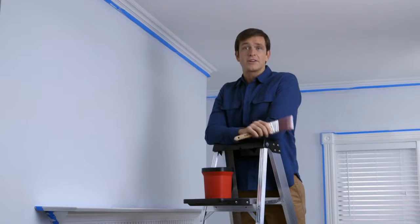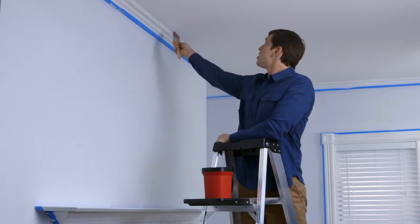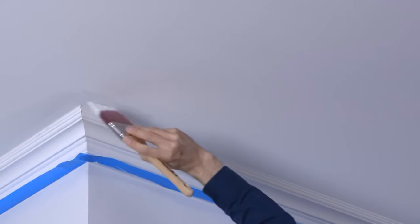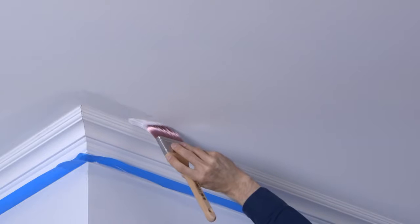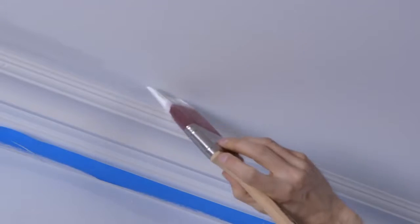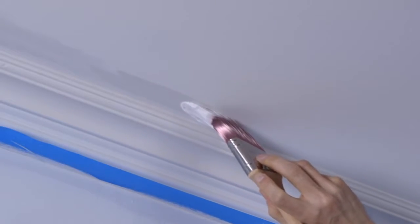If your ceiling is part of your painting project, you'll want to start here, along the edges. Using an angled bristle brush, carefully paint a strip along where the ceiling meets the wall, or along your crown molding if you have that.